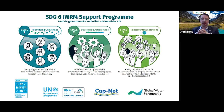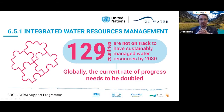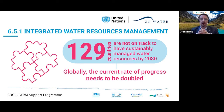This approach is very much needed because the current rate of progress globally needs to be doubled. In some countries it needs to be much more than doubled, depending on the progress being made. 129 countries around the world are currently not on track to meet the 2030 target.